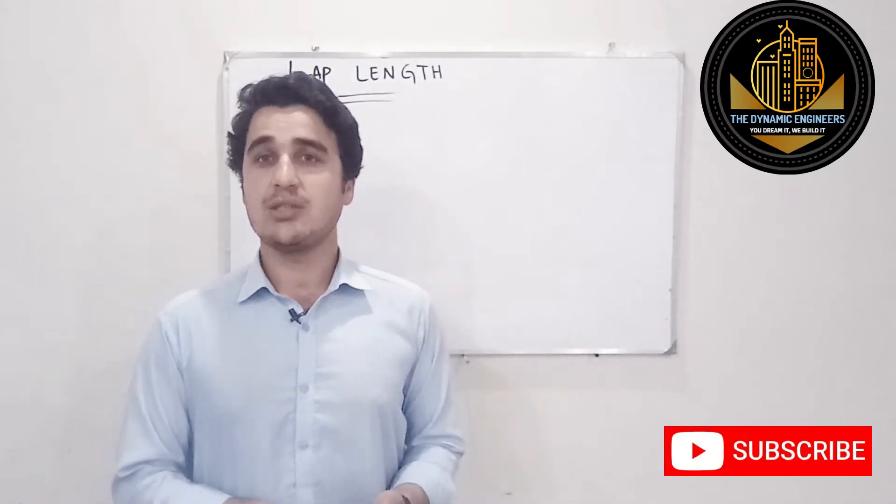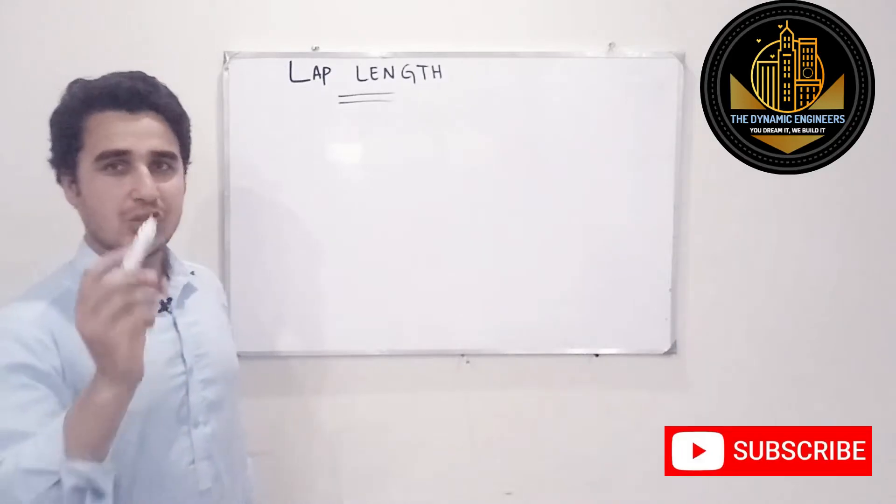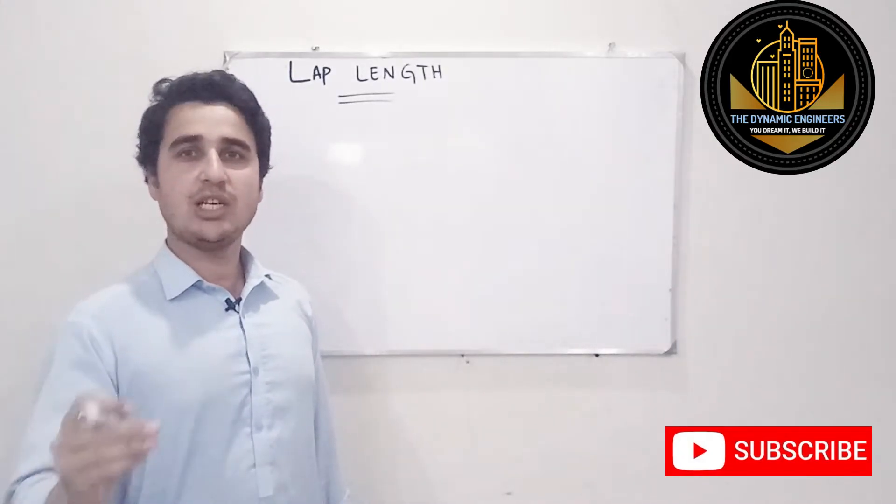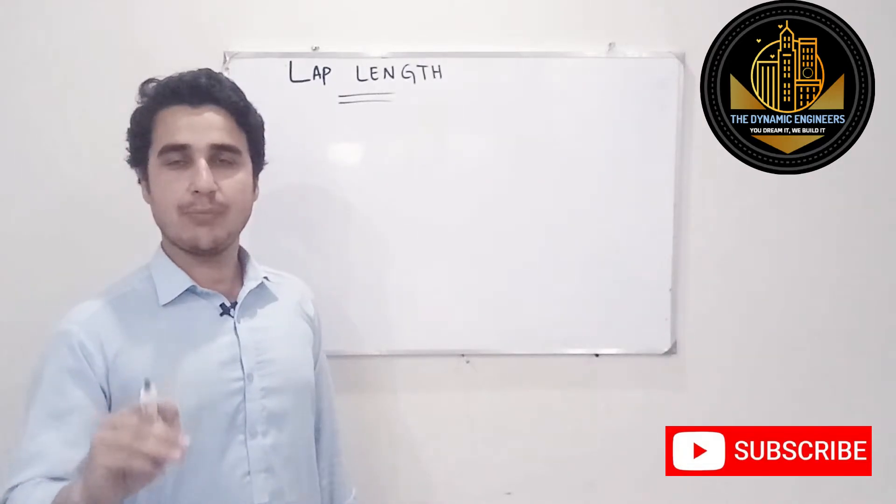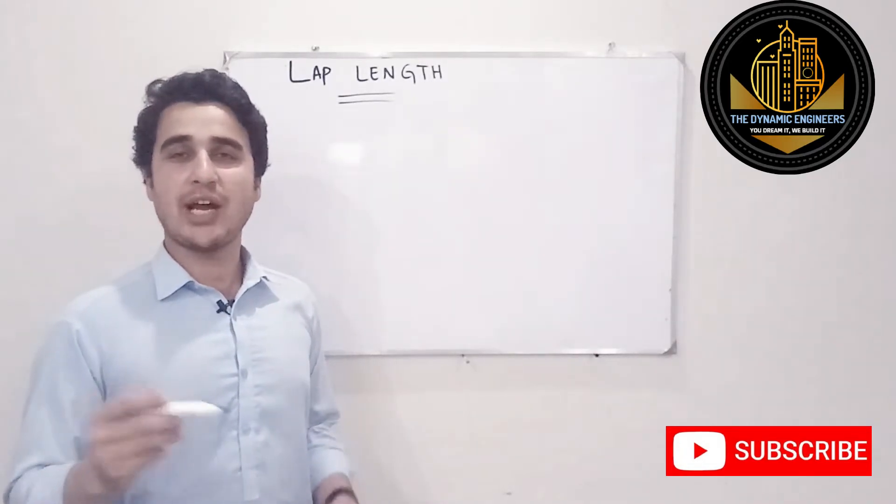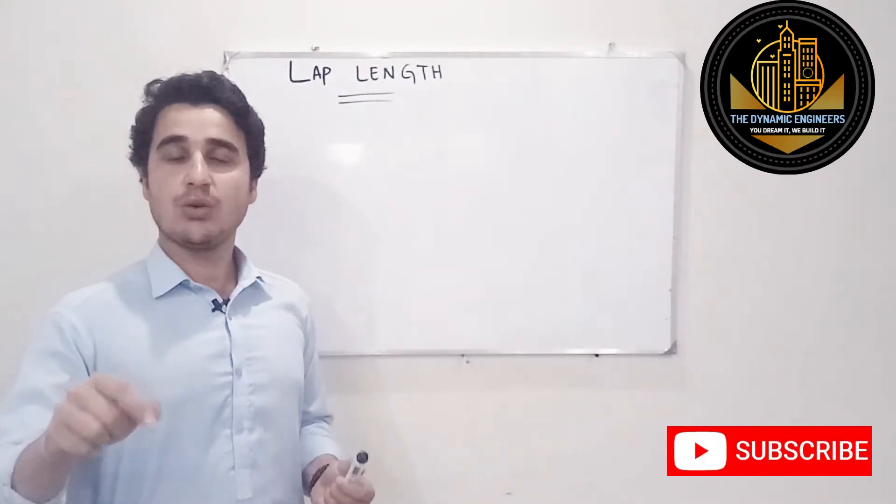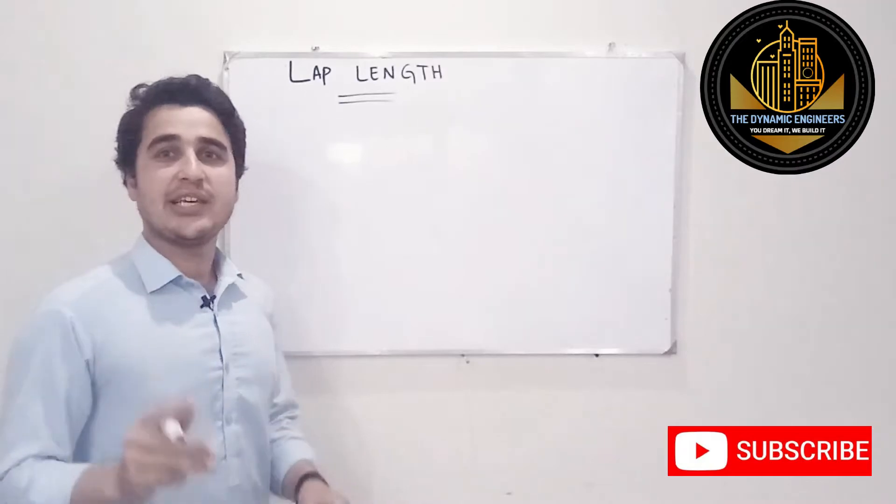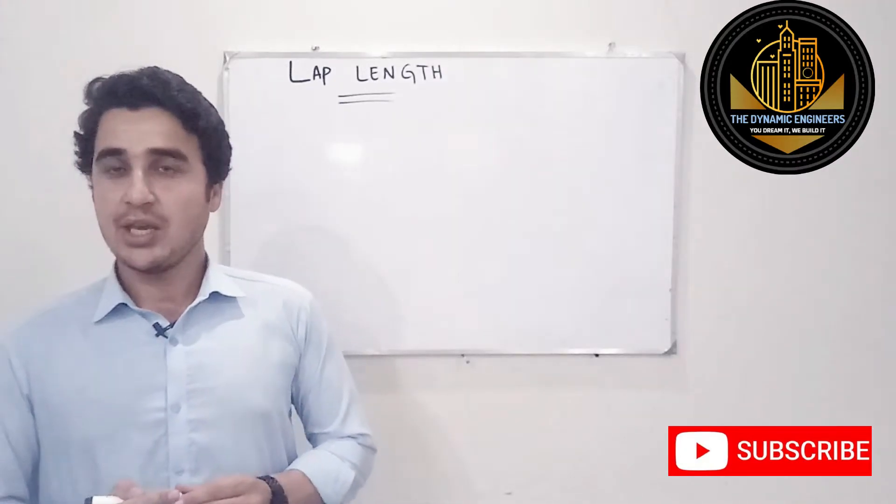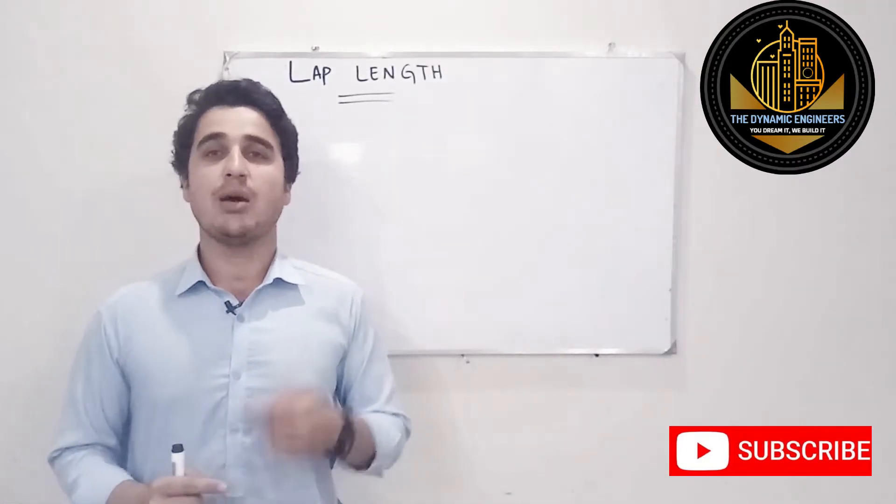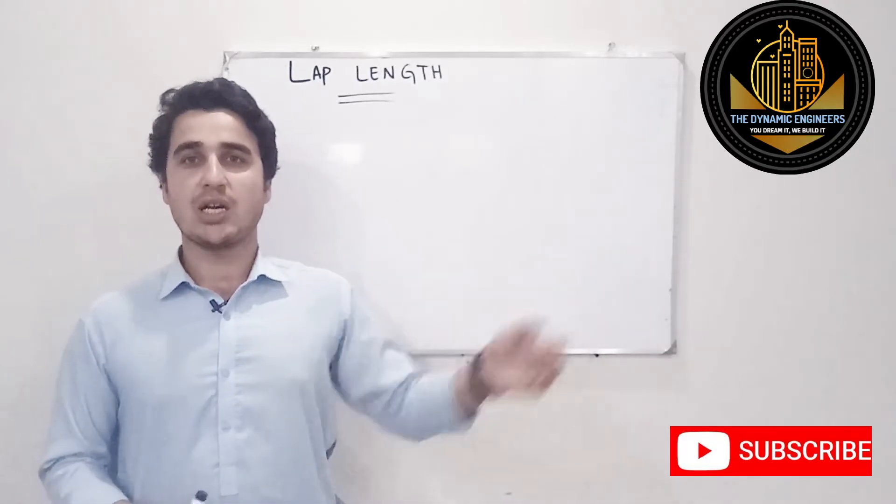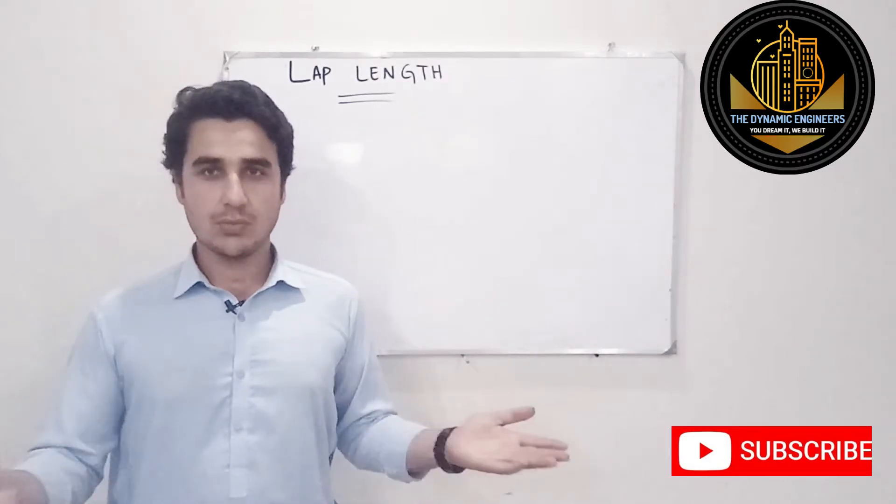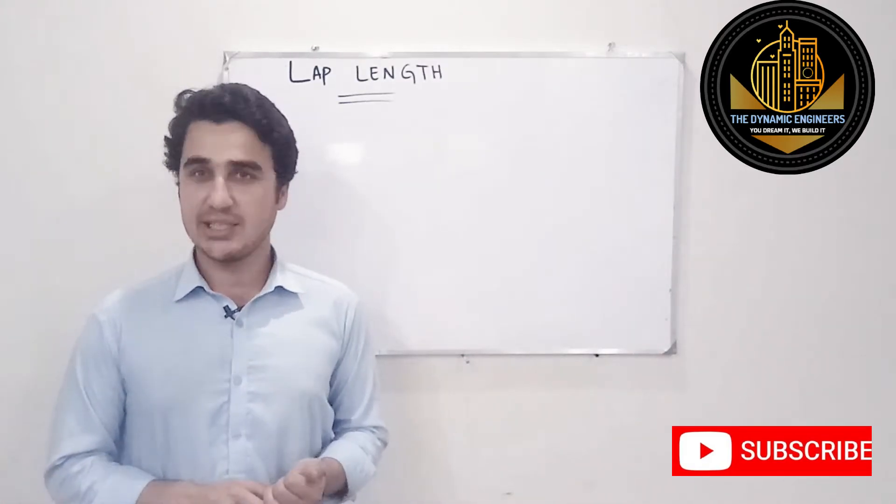This is an important question. Whenever you are using steel bars in any steel member, in any RCC member, and you need to provide that steel bar in a length which is greater than standard bar length, like the standard bar length is 12 meters. Now, if you remember, like a beam is longer than 12 meters or a column that is higher than 12 meters, which is a normal case in high-rise buildings.